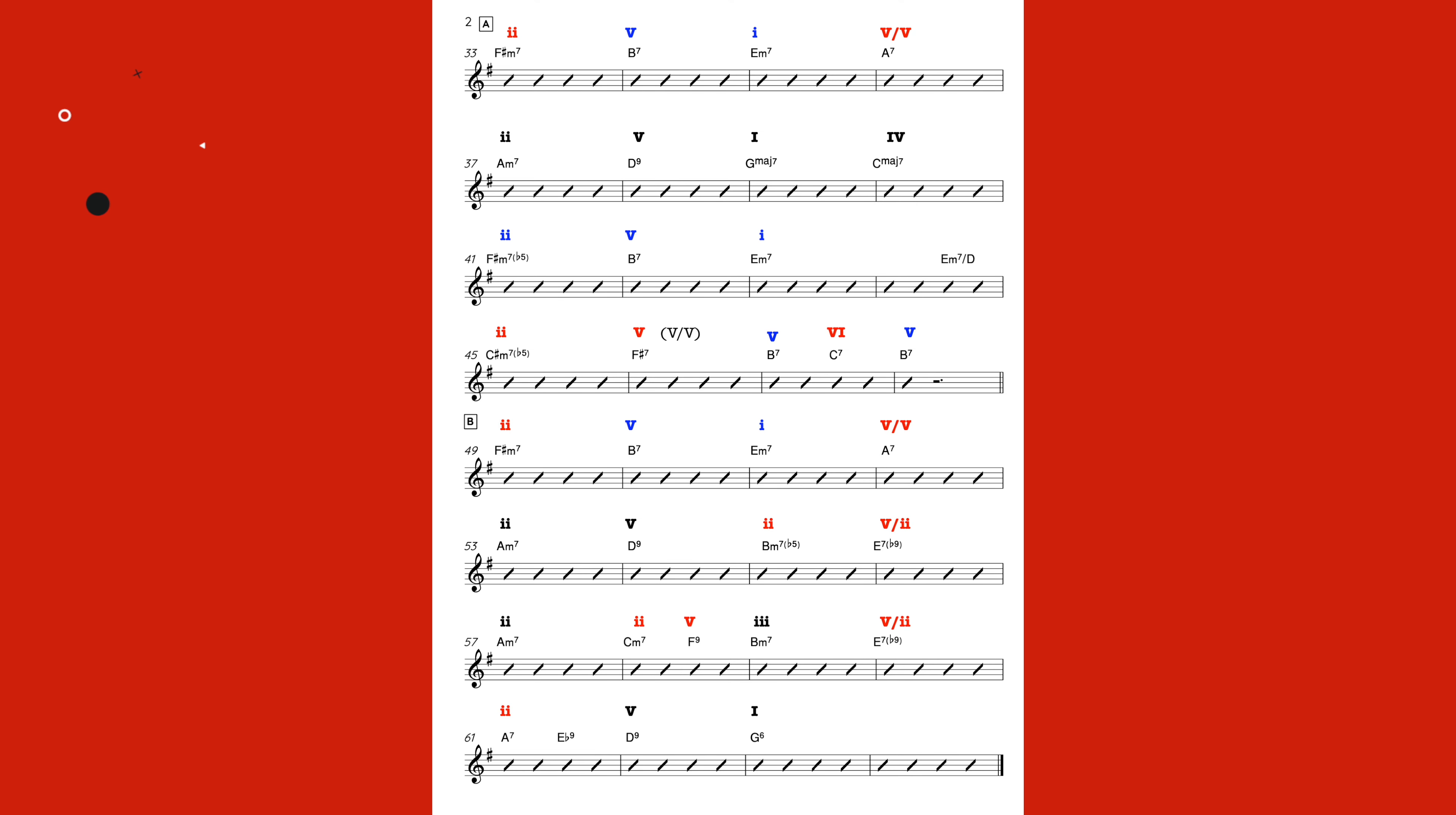Now, I should explain about the colors I've used to label these Roman numerals. Here's the whole thing on the screen. Where it's red, it's an out of key chord. Where it's blue, it's the key of E minor. And where it's black, it's the key of G major.